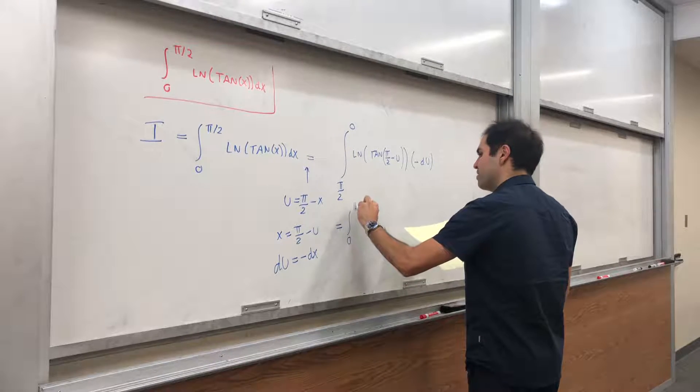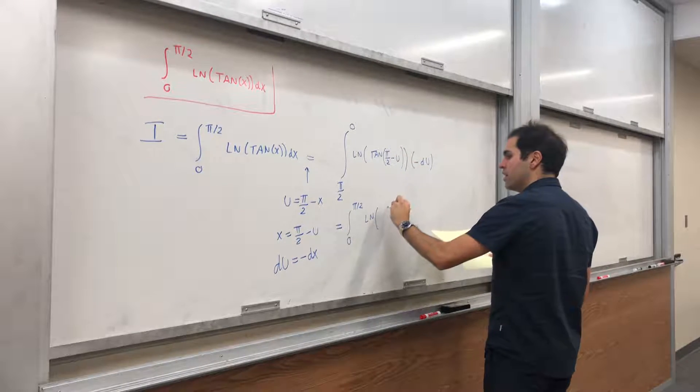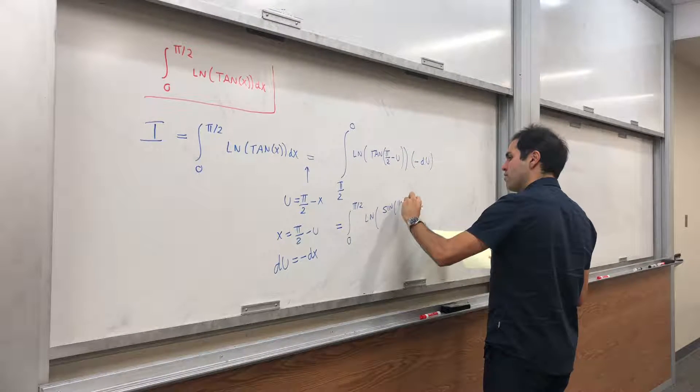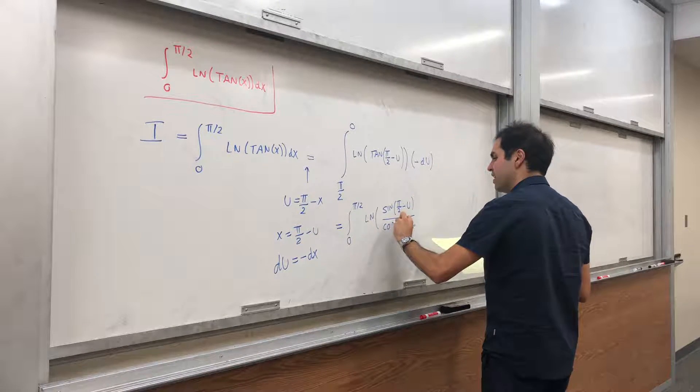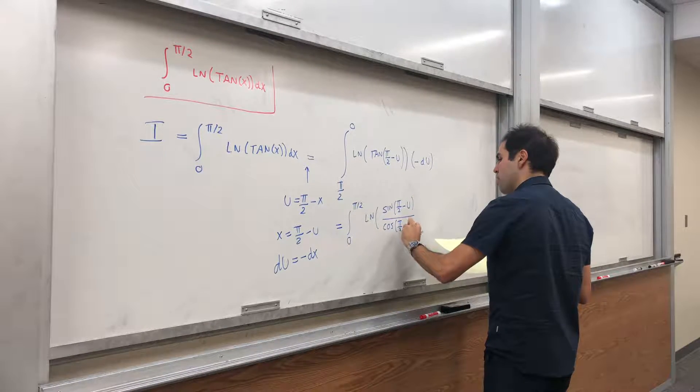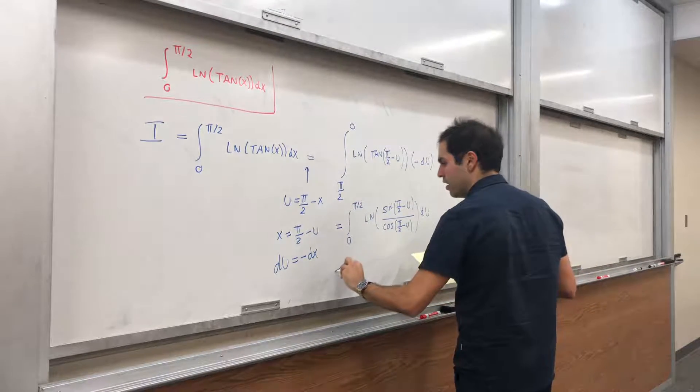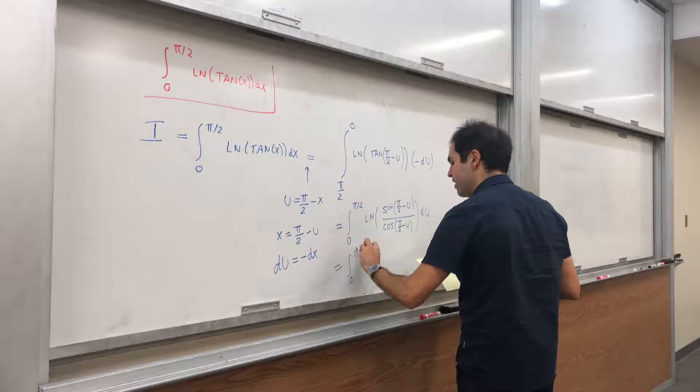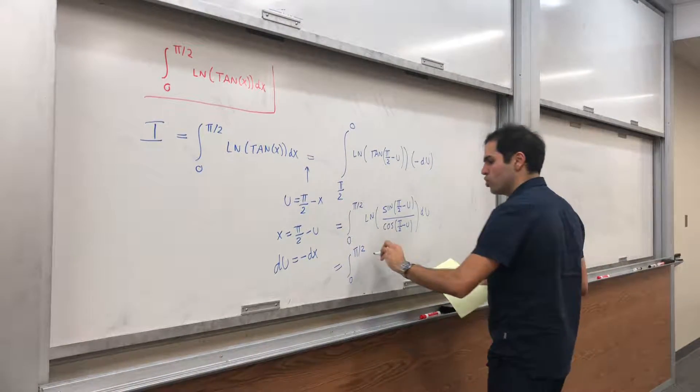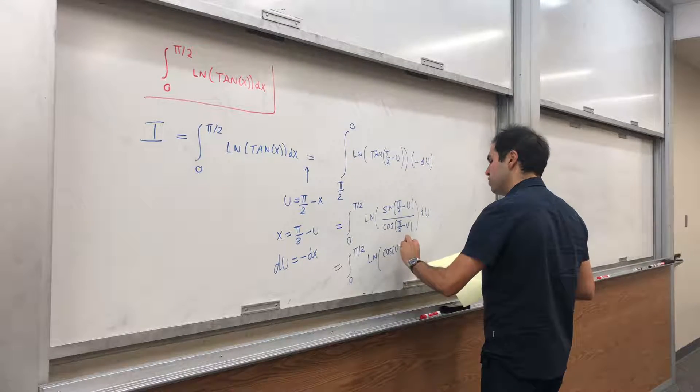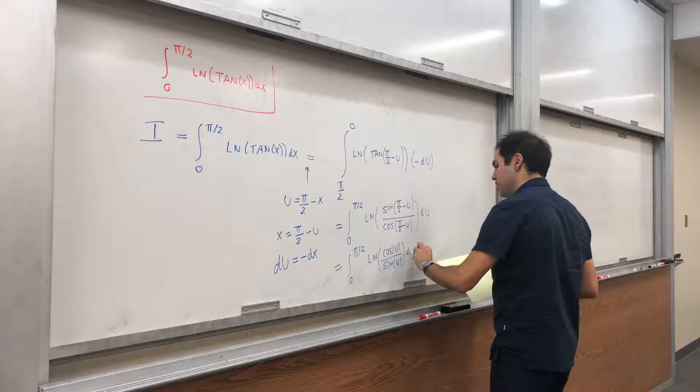So integral from 0 to π over 2, ln of sine of π over 2 minus u, du. And then, what is sine of π over 2 minus u? It's just cosine. So ln of cosine of u over sine of u, du.